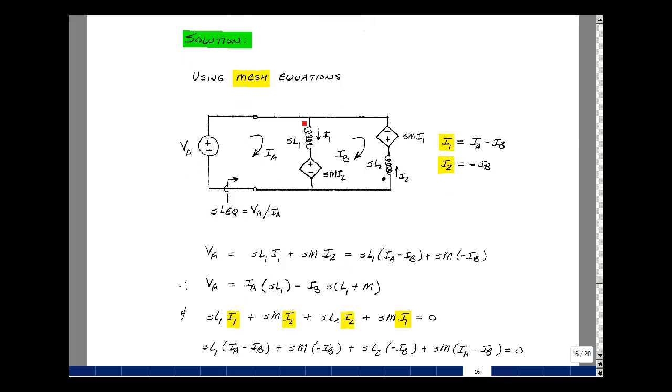And in a particular case here, we have that I1 is equal to I sub A minus I sub B, and then we also have that I2 is equal to minus I sub B. I can write the equations by inspection or we could just do Kirchhoff's voltage law. We're on a loop. Let's just do that. So the rise in voltage here would equal the drops across here. So V sub A is equal to SL1 times I1 plus SMI2. Let's substitute in the value for I1 as I sub A minus I sub B and for I2 minus I sub B. Then we can group together all the things that multiply I sub A and I sub B.